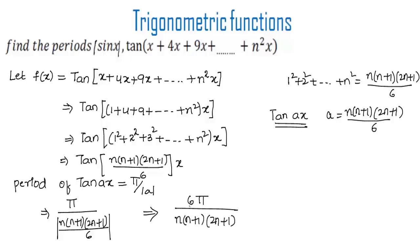So 6π/[n(n+1)(2n+1)] is the period of the function tan(x + 4x + 9x + ... + n²x). Hope you understood the concept. Do like and subscribe to vdeachacademy.com. Thanks for watching, have a nice day.